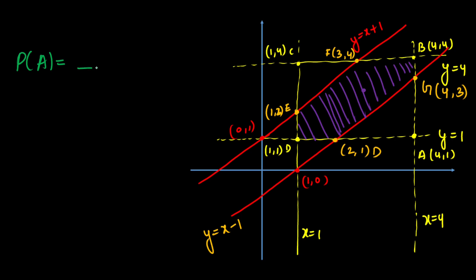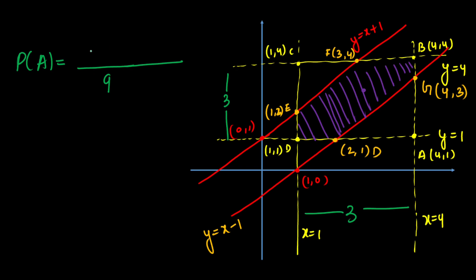The total area of the sample space square: the length between X = 1 and X = 4 is 3, and between Y = 1 and Y = 4 is also 3. So total area = 3 × 3 = 9. Now we calculate the area of the two triangles to subtract.